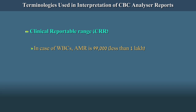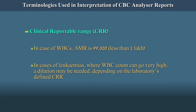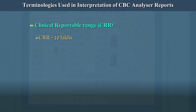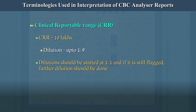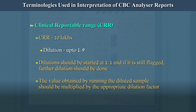However, in case of WBCs, the AMR is 99,000, i.e. less than 1 lakh. In cases of leukemias, especially CML, where WBC count can go very high, a dilution may be needed depending on the laboratory's defined CRR. If the lab has set 10 lakhs as the CRR, a dilution up to 1 to 9 should be done. Dilutions should be started at 1 to 1, and if still flagged, further dilution should be done. The value obtained by running the diluted sample should be multiplied by the appropriate dilution factor.